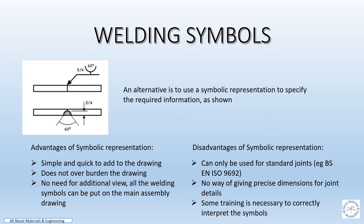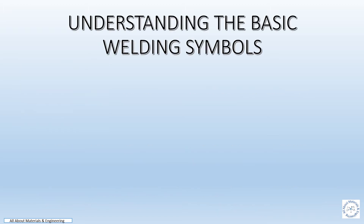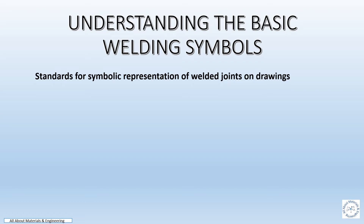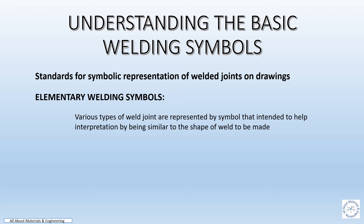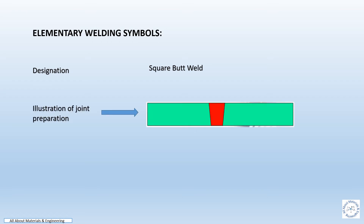Some training is necessary to correctly interpret the symbols. Standards for symbolic representation of weld joints on drawings include elementary welding symbols. Various types of weld joints are represented by symbols that are intended to help interpretation by being similar to the shape of the weld to be made. Examples of symbols used by EN ISO 2553:2014 are shown below.